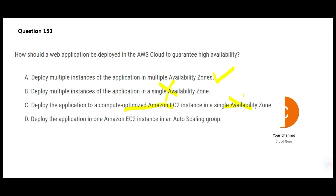Option C says you deploy the application to a compute-optimized EC2 in a single AZ. If it is a single AZ it will still not work, because for high availability you need multiple AZs. Option D says deploy the application on one EC2 instance in auto scaling — this is incomplete; it doesn't specify how many AZs will be used. Since D is incomplete, I'll mark it wrong. So option A is my final answer.